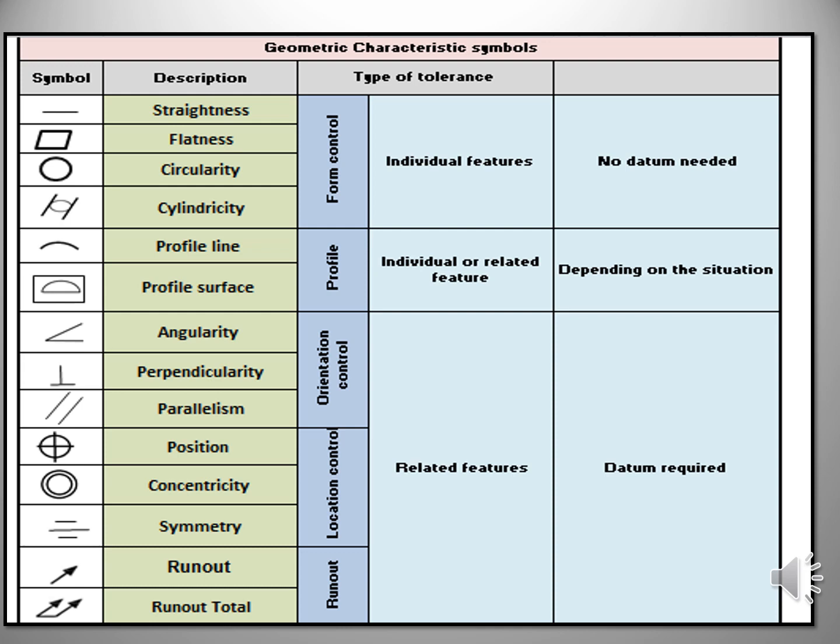And this is a individual features. Why? Because no datum is needed. Second classification is profile control. In profile control, line profile and surface profile is there. This is depending upon the situation, may be individual features or related features. Third classification is orientation control. Angularity, perpendicularity and parallelism comes under orientation control. This is a related feature.